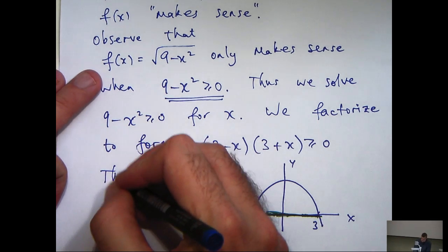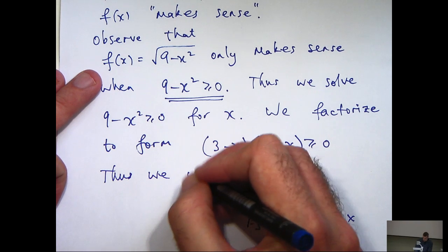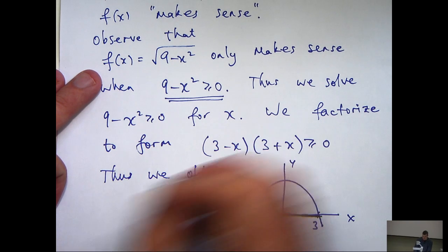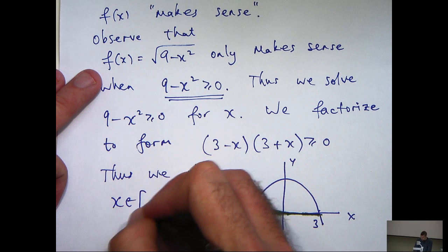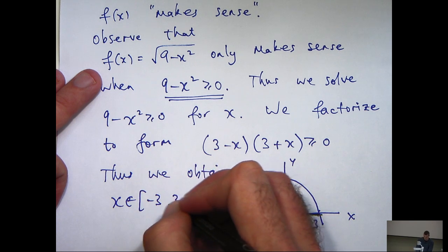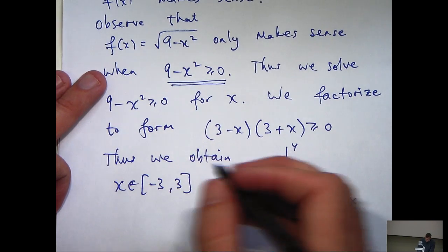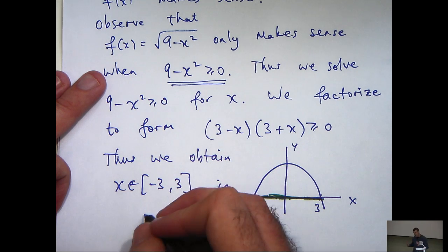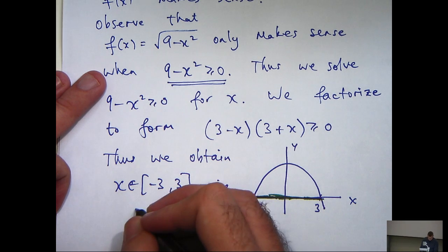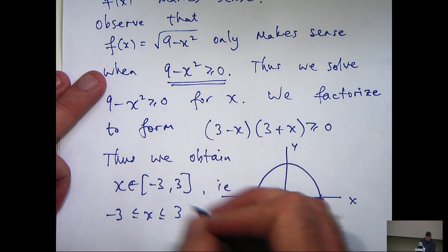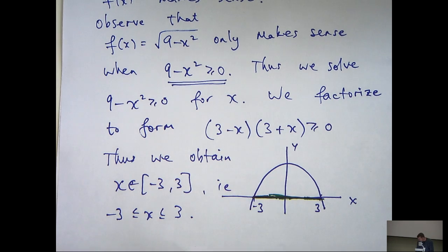So the corresponding x values lie between negative 3 and positive 3. So we can solve our inequality. x is in this interval here. And by this interval, of course, I mean x is greater than or equal to minus 3, less than or equal to 3. So this is our domain.